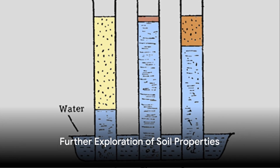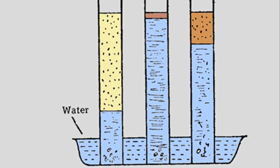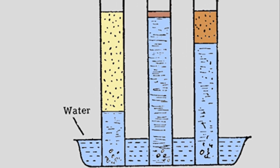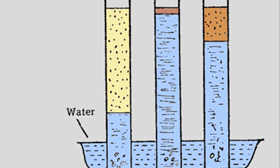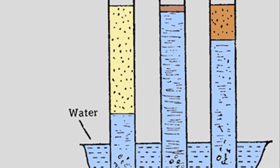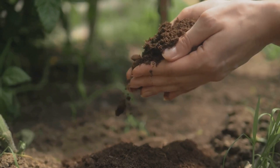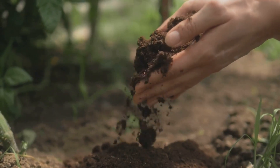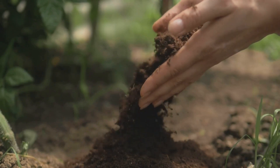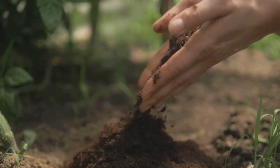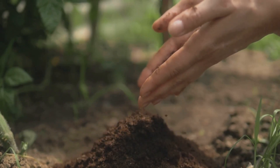Capillarity, the ability of soil to draw water upwards, can be observed by placing a soil-filled tube in a dish of colored water and watching how high the water climbs. Color can tell us a lot about a soil's organic matter and mineral content, while pH, measured with a simple test kit, reveals whether the soil is acidic, neutral, or alkaline.